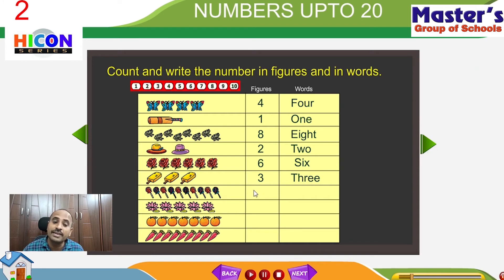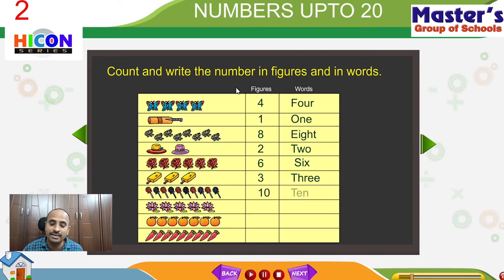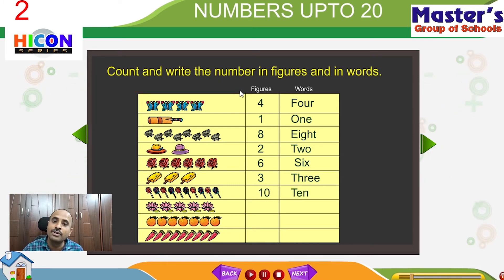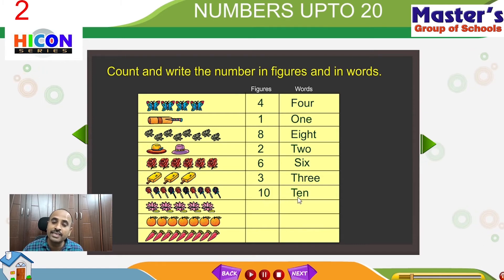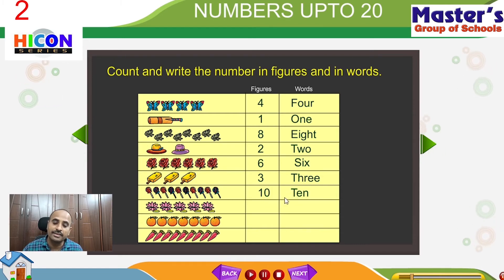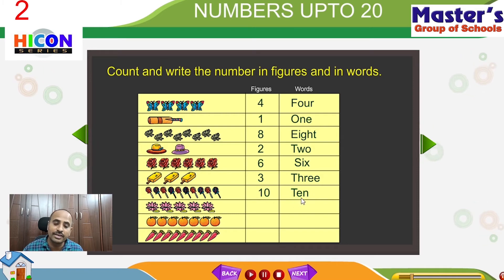The number 10 can be written like this. This is called the number 10, and we can write 10 in words like this. The spelling for the number 10 is T, E, N — ten. This is the word form for the number 10.